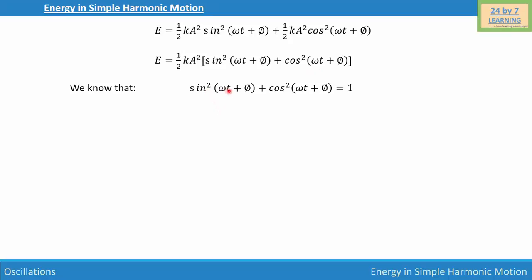Using the trigonometric identity sin²(ωt + φ) + cos²(ωt + φ) = 1, we substitute to get E = ½kA² × 1, which gives E = ½kA². Here k is the spring constant and A is the amplitude — the maximum displacement on both sides of the equilibrium position.